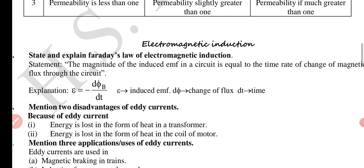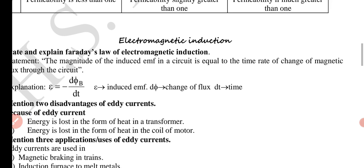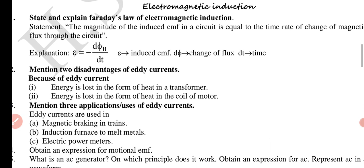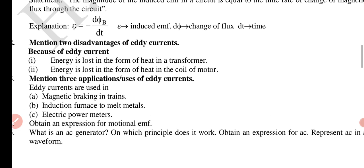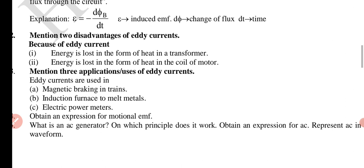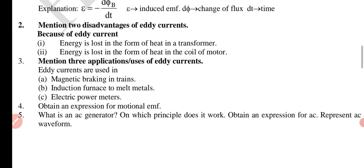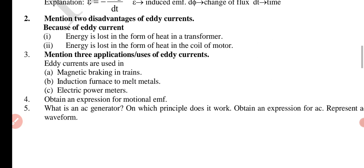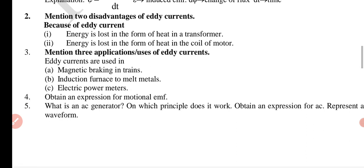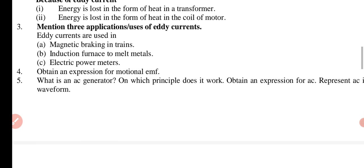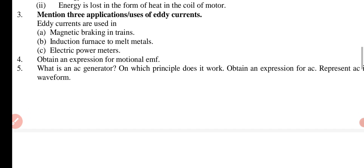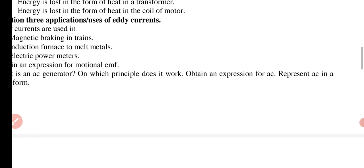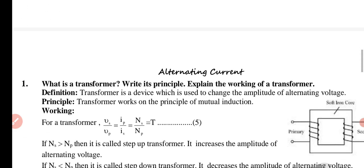Electromagnetic induction chapter. State and explain Faraday's laws of electromagnetic induction. There are two disadvantages of eddy currents: because of eddy current energy is lost in the form of heat, energy is lost in the form of heat in the coil of motor. Mention three applications or uses of eddy current: eddy currents are used in magnetic braking in trains, induction furnace to melt metals, electric power meters. Obtain an expression for emotional EMF. What is an AC generator, on which principle does it work, obtain an expression for AC, represent AC in a waveform.